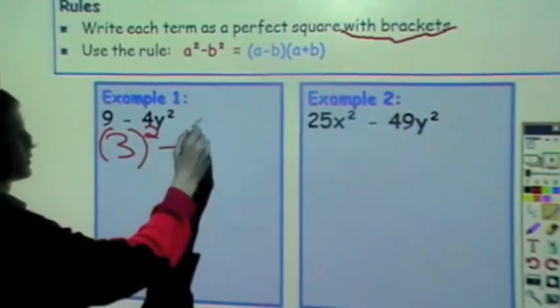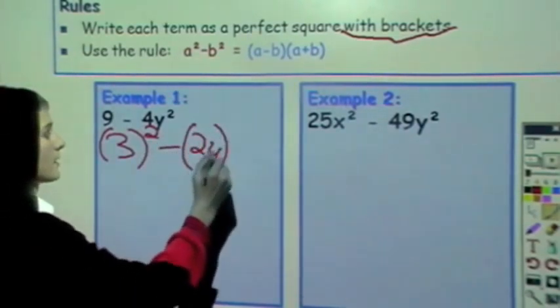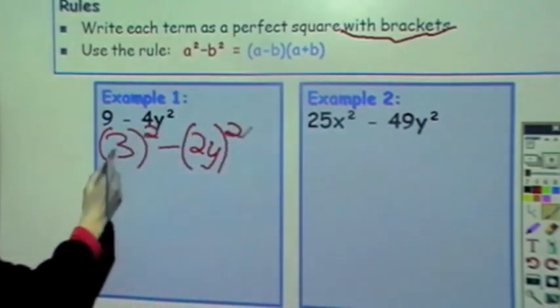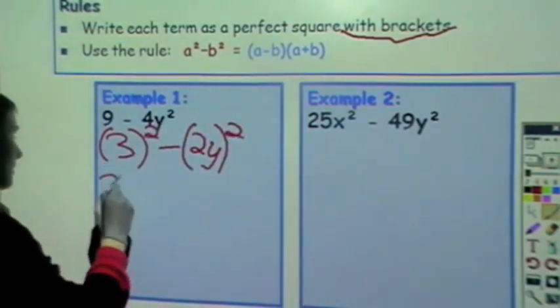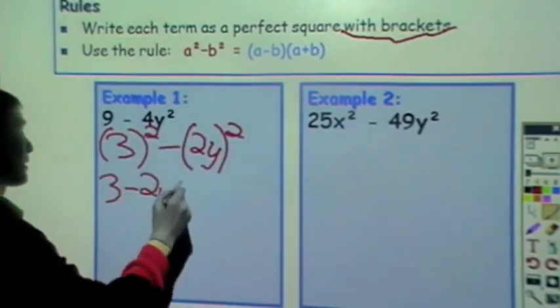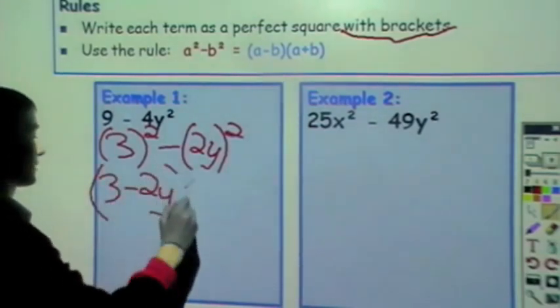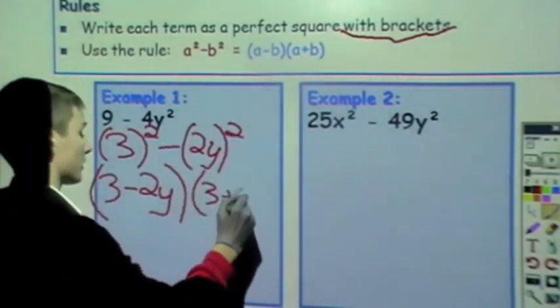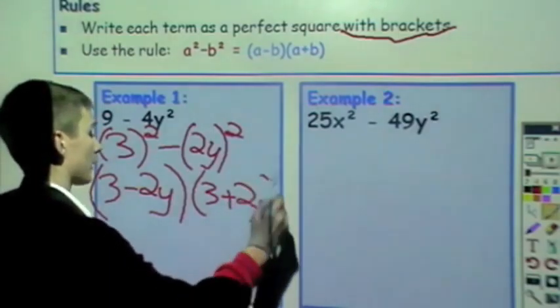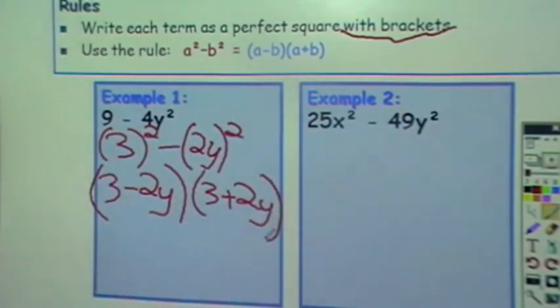minus 2y squared. So now we do 3 minus 2y in brackets and 3 plus 2y all in brackets. And that's our answer for the first sum.